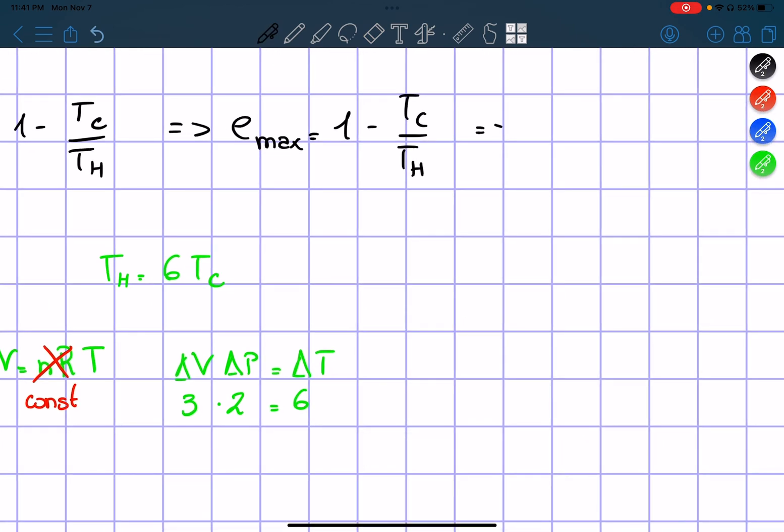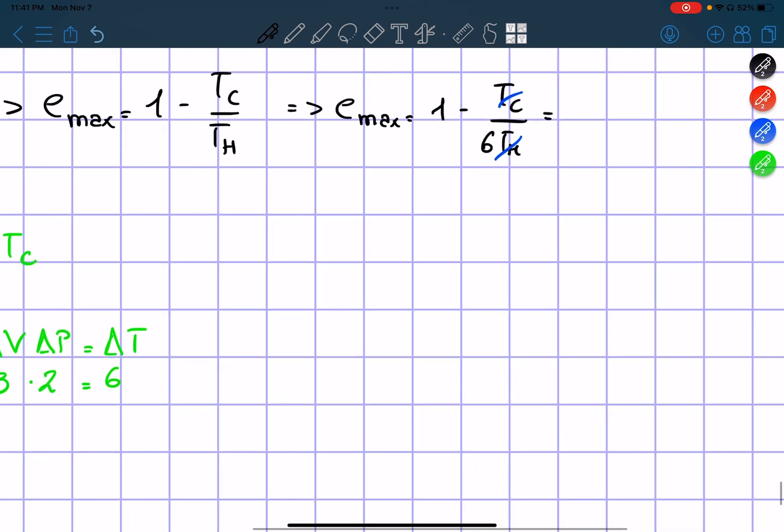And so we know that the maximum efficiency is going to be equal to 1 minus Tc over T hot. So we have 1 minus 1 sixth. 1 minus 1 sixth equals 5 over 6, which is approximately 83%. And that is the solution to problem 4.1.